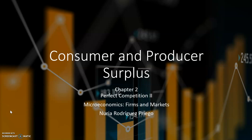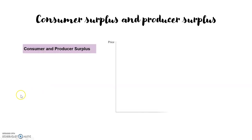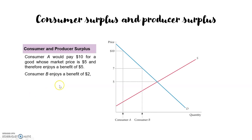Hi, this is the first video of Chapter 2, Perfect Competition, and in this video we are going to talk about consumer and producer surplus.